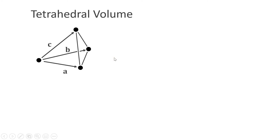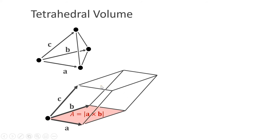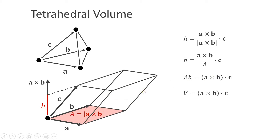We can also use the cross product to compute the volume of a tetrahedron. Given a tetrahedron defined by vectors a, b and c: the length of a cross b is the area of the parallelogram defined by a and b. With c we define a parallelepiped, and to compute its volume we need the height — the projection of c in the direction of a cross b. That height h is the dot product of the normalized vector a cross b with c. Multiplying the base area by h gives the volume of the parallelepiped as a cross b dot c. Since the volume of a tetrahedron is one-sixth of the parallelepiped, we get this nice formula for the tetrahedron's volume.